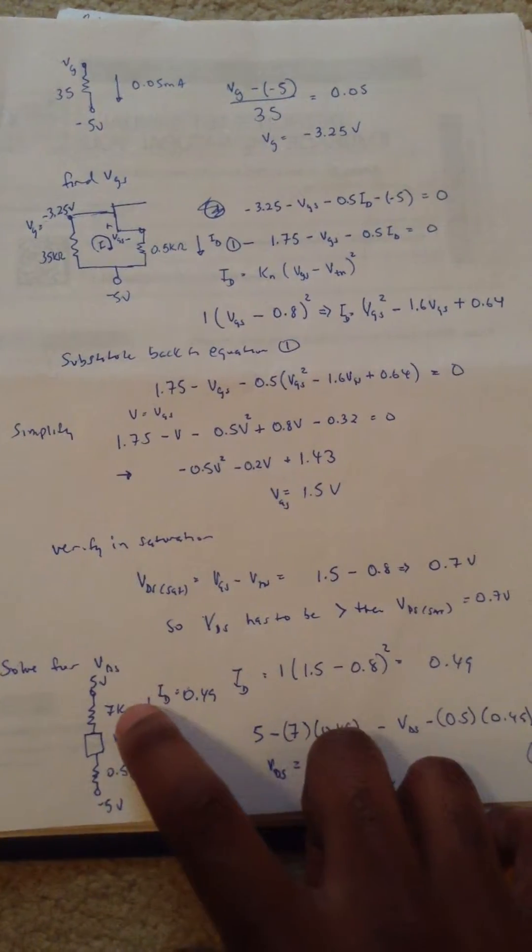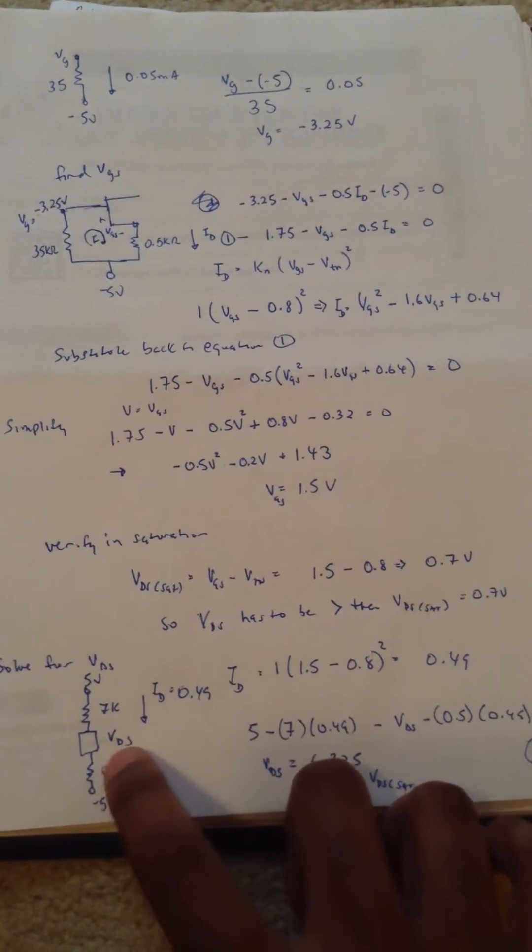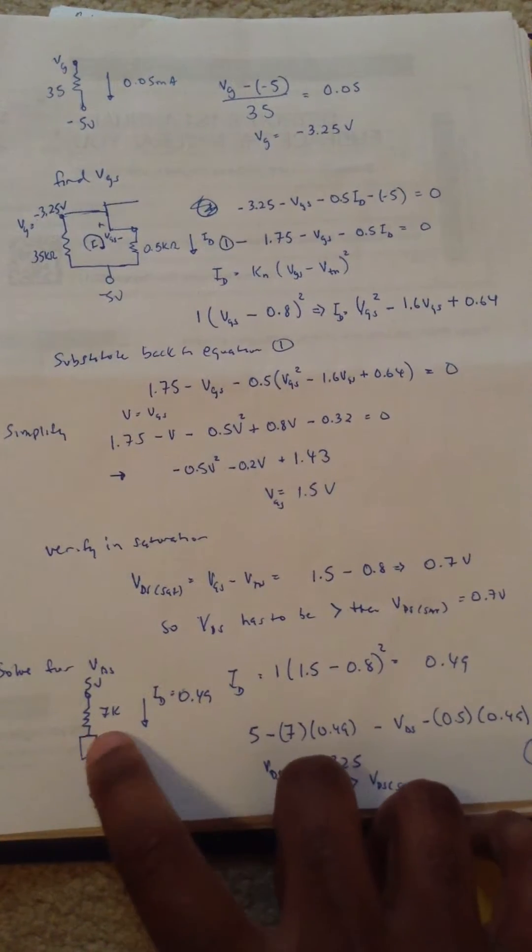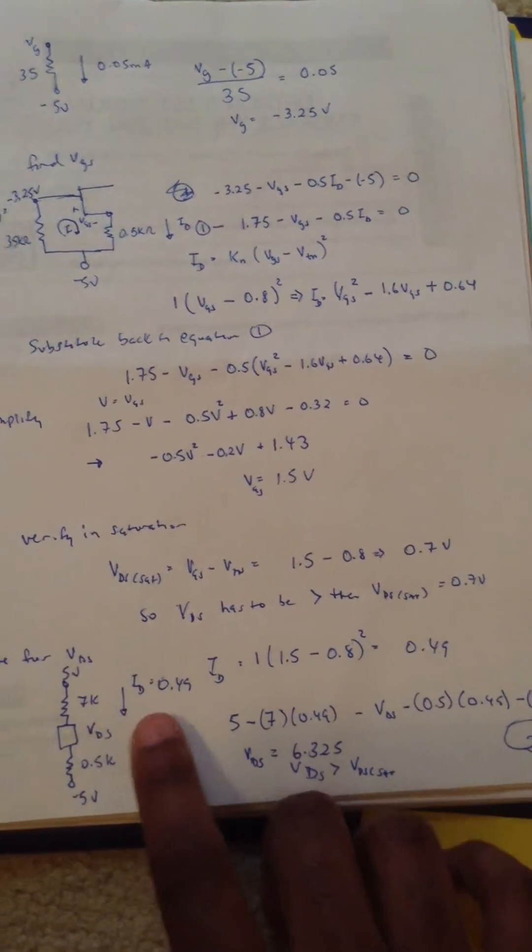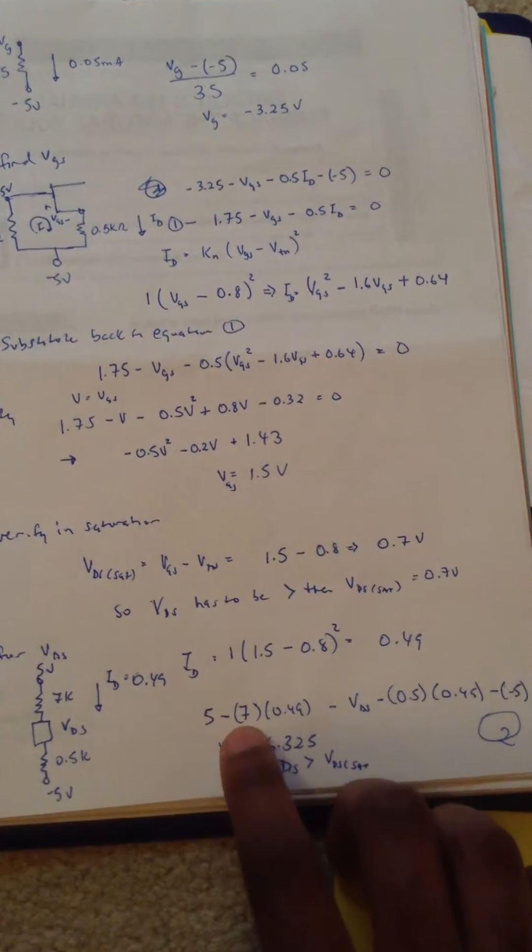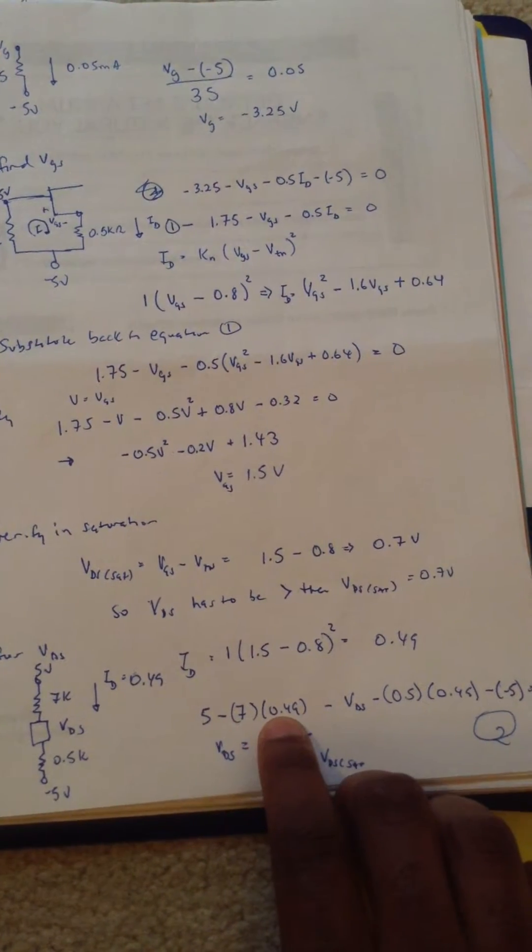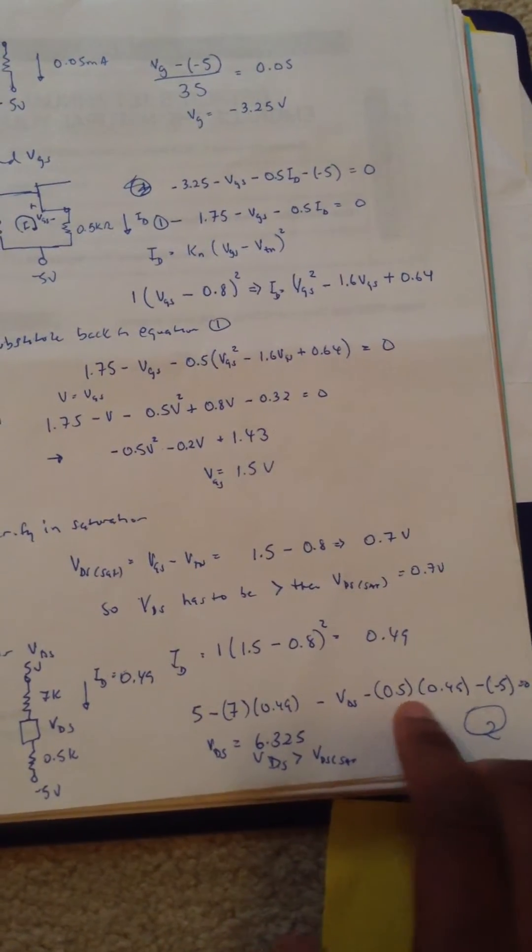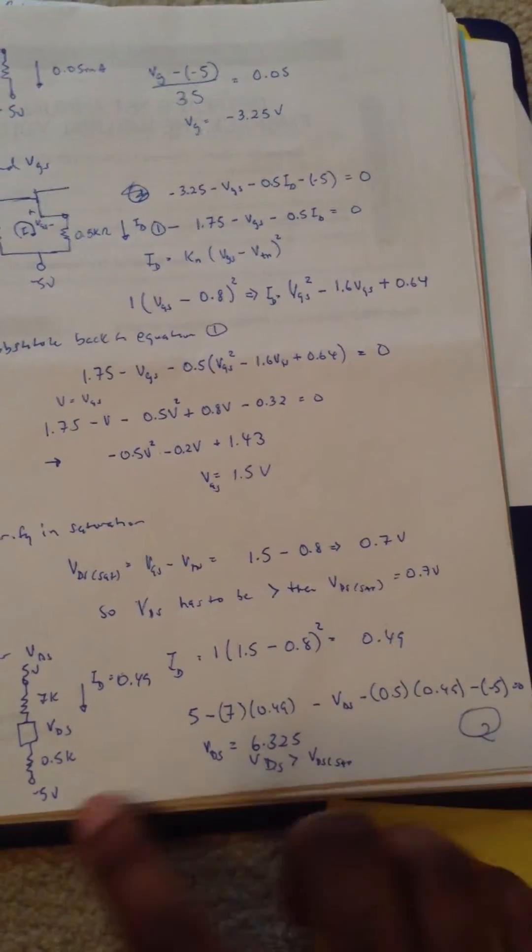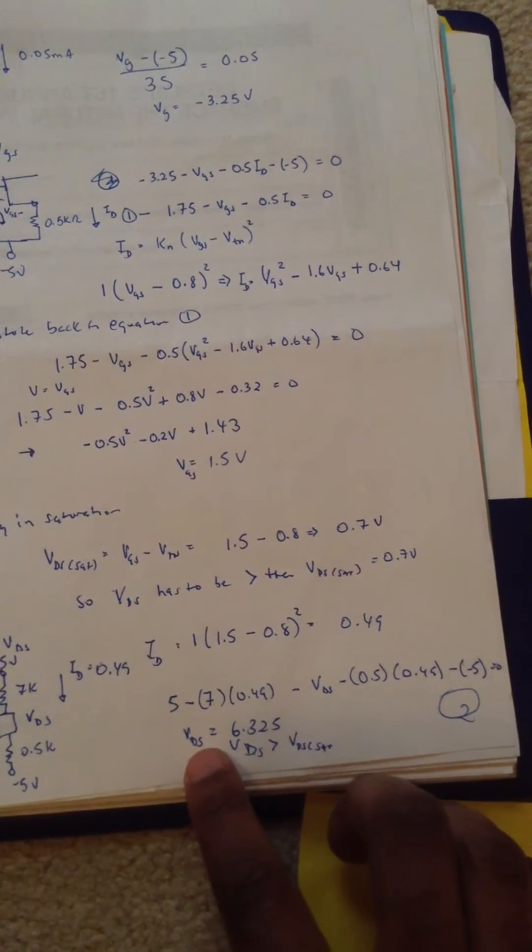That's what's done here. We have 5 volts, 7 ohms, and we need to solve for VDS, so that's an unknown element there. And we're just going to use KVL again. 5 minus 7 times the drain current, minus VDS, minus 0.5 times the drain current, minus the negative 5. And then solving for VDS,